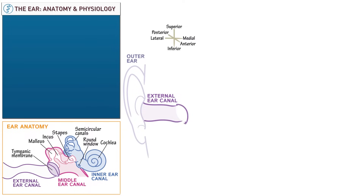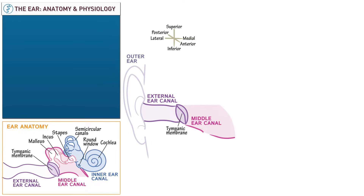Next draw the tympanic membrane. Now draw the middle ear canal, which also lies mostly within the tympanic portion of the temporal bone. Indicate that from lateral to medial it contains three ossicles: the malleus, incus, and stapes, which are Latin for hammer, anvil, and stirrup.